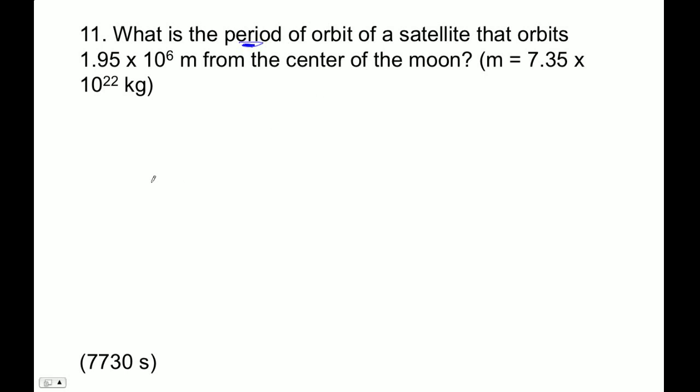So we're going to use the period relationship here. I'm going to say centripetal force, so satellite mass times four pi squared r over t squared, that equals the force of gravity, which is G central body satellite over r squared.